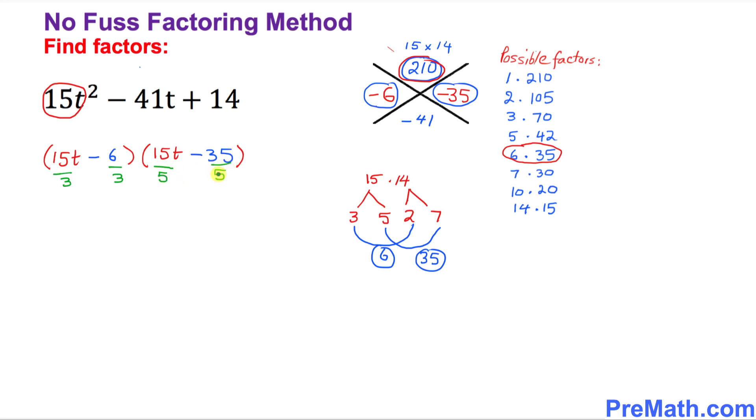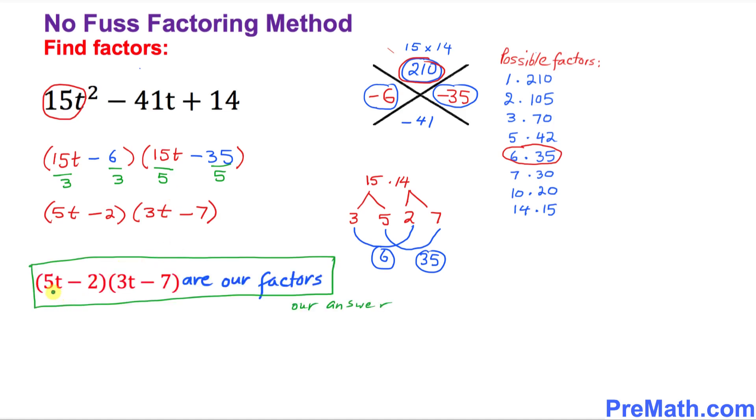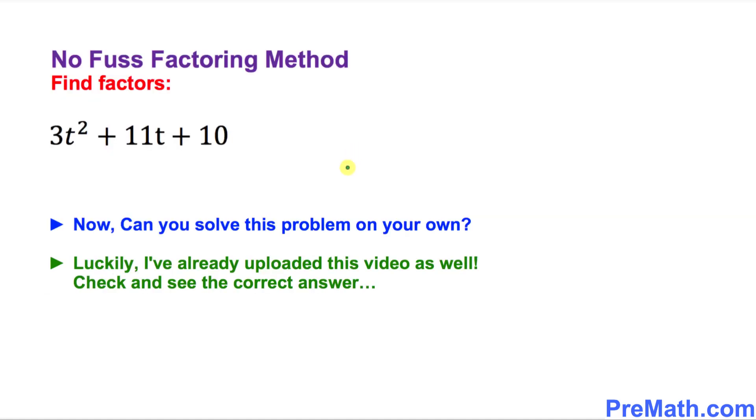Now we are going to simplify. The first parentheses is going to become 5t minus 2 times 3t minus 7. So these are our factors. Thus, (5t - 2) times (3t - 7) are our factors, and that is our answer. Now here is your assignment: can you do this problem on your own?